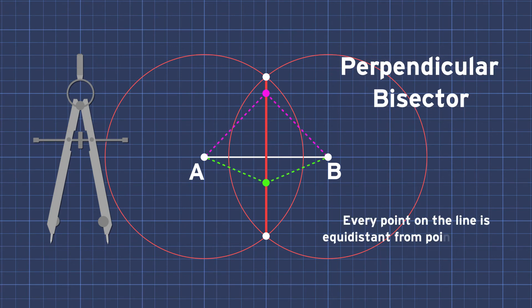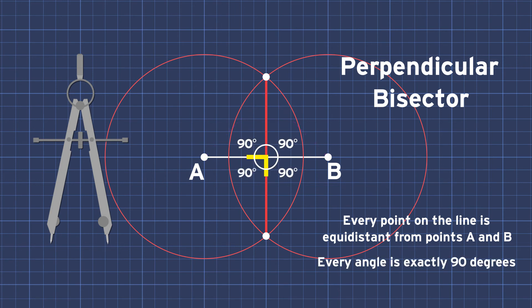Every point on this new line is equidistant from A and B, and every angle is exactly 90 degrees. Now that should fix these windows.